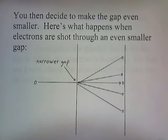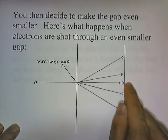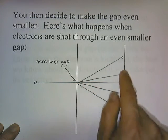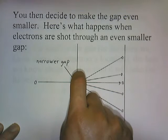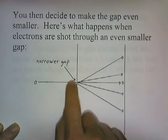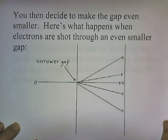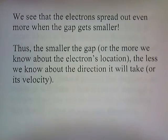We decide to make the gap even smaller. When the electrons are shot through this even more narrow gap, some of them pass straight through. But as in the previous example, some of them deviate, and we're getting even more deviation from the original direction. The more narrow we make the gap, the more likely it is the electrons are going to change direction, and the greater the probability that they're going to change direction by a wider degree. We see that the electrons spread out even more when the gap gets smaller. The smaller the gap, or the more we know about the electron's location, the less we know about the direction it takes — or its velocity.